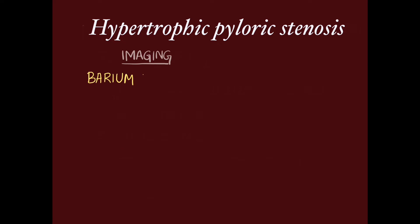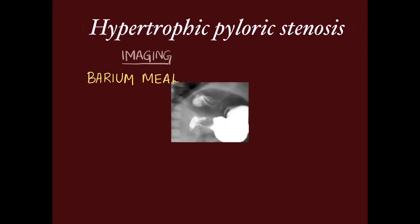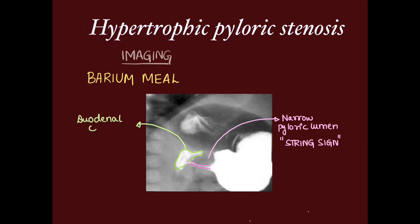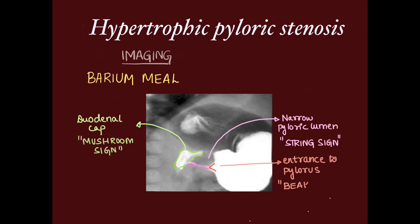On barium meal study, various signs are described. We can see a narrow pyloric lumen, which is called the string sign, and the duodenal cap filled with barium, called the mushroom sign. The entry to the pylorus is beak-shaped and hence known as the beak sign.